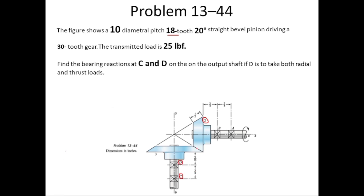Gear 2 is rotating in this direction, so gear 3 (shaft D) will rotate accordingly. The radial force on gear 3 will be exerted as shown. Since bearing D is taking the thrust load, the axial or thrust load on gear 3 will be in the negative y-direction, and the tangential force on gear 3 will be out of the page.